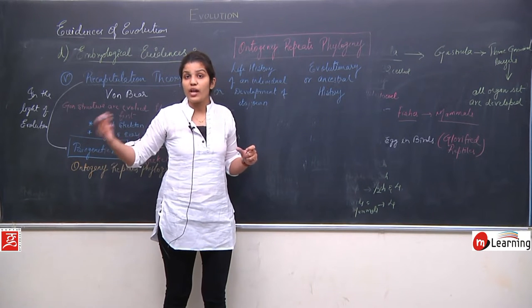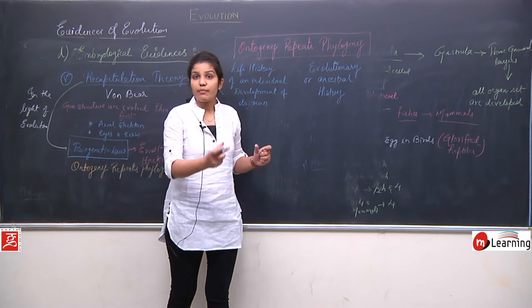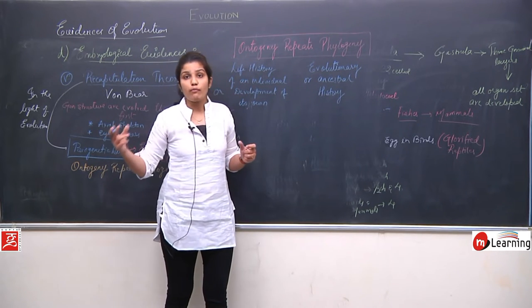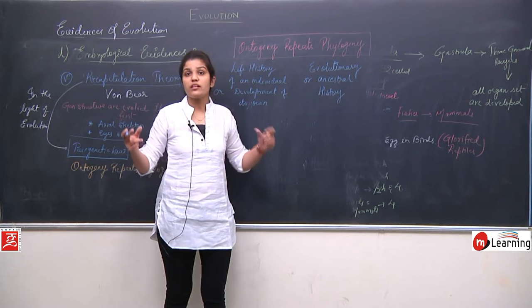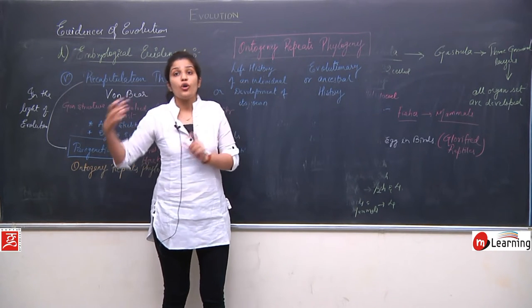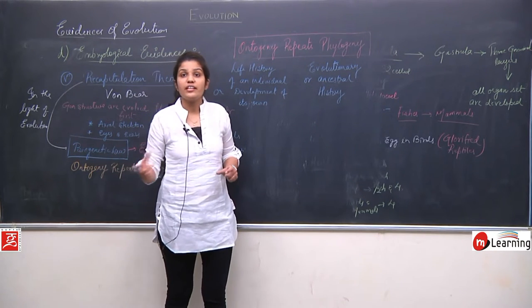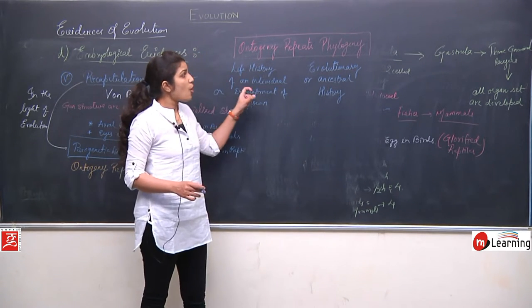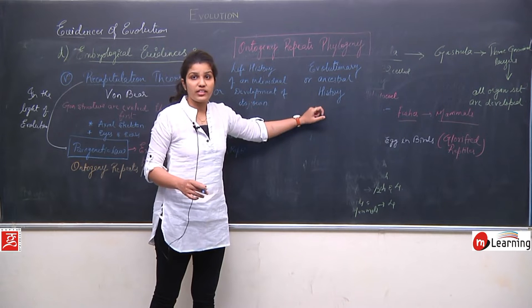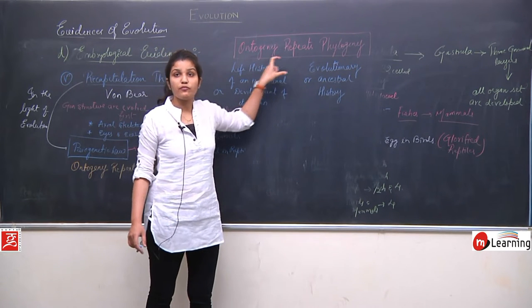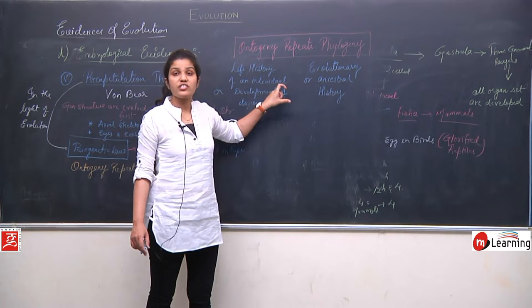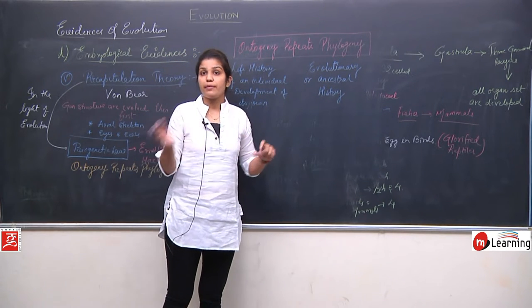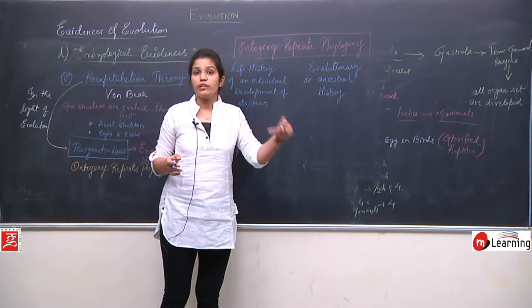During evolution, organisms evolved one after another into higher evolved organisms. So at the time of individual development, they are following the ancestral history also. This was about ontogeny repeats phylogeny — that ancestral history is being followed during one's own development, to show the course of evolution.